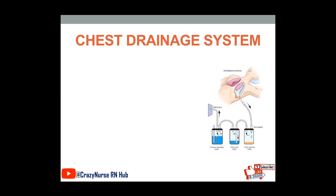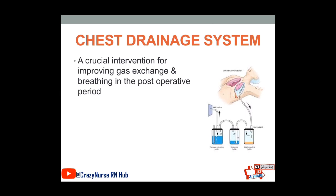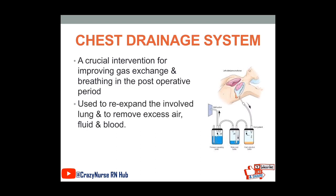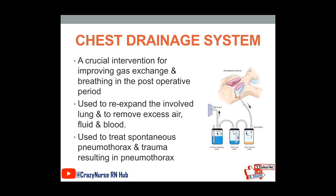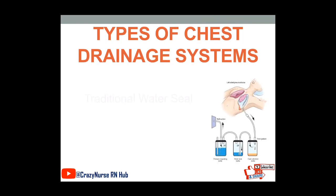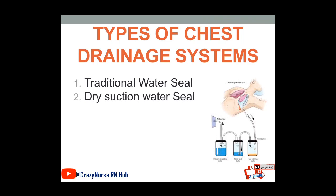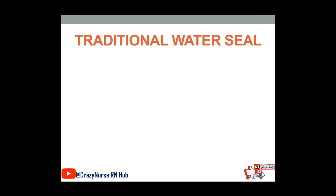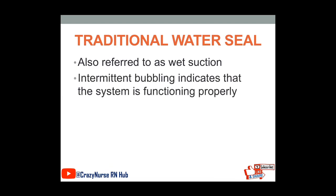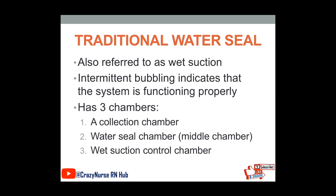Now let's discuss the chest drainage system. It is a crucial intervention for improving gas exchange and breathing in the post-operative period. It is used to re-expand the involved lung and to remove excess air, fluid, and blood. It is also used to treat spontaneous pneumothorax and trauma resulting in pneumothorax. We have three types of chest drainage systems: traditional water seal, dry suction water seal, and dry suction.